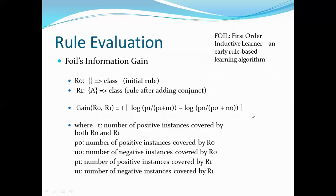With this gain formula, you calculate whether adding a conjunct improves the rule. If there is a gain, it becomes the next more effective rule. This is how a rule can be evaluated.